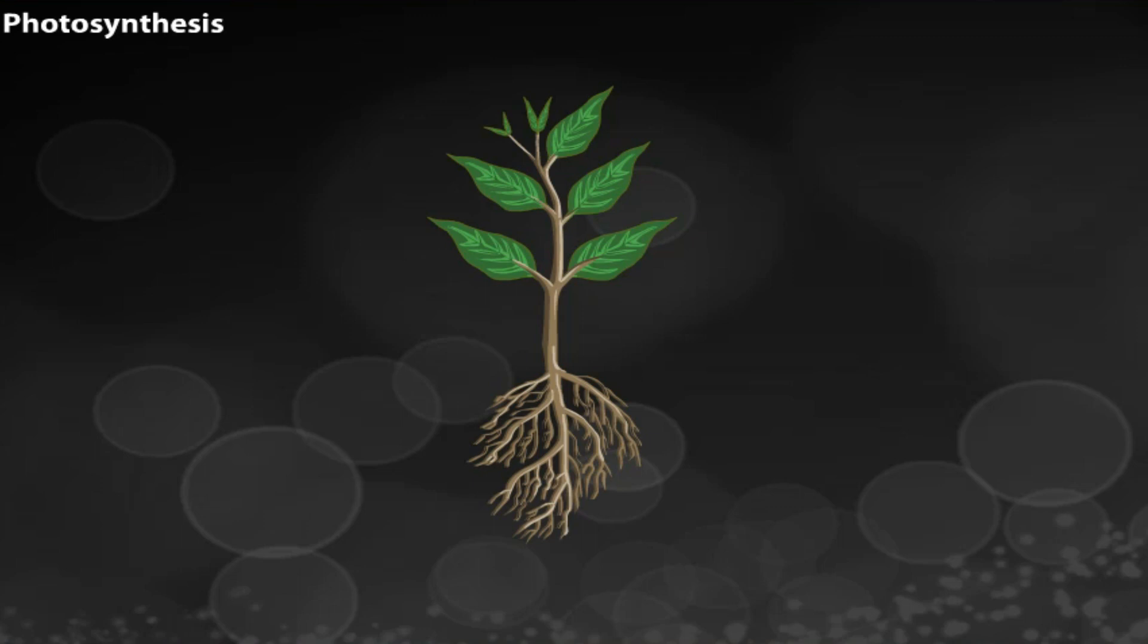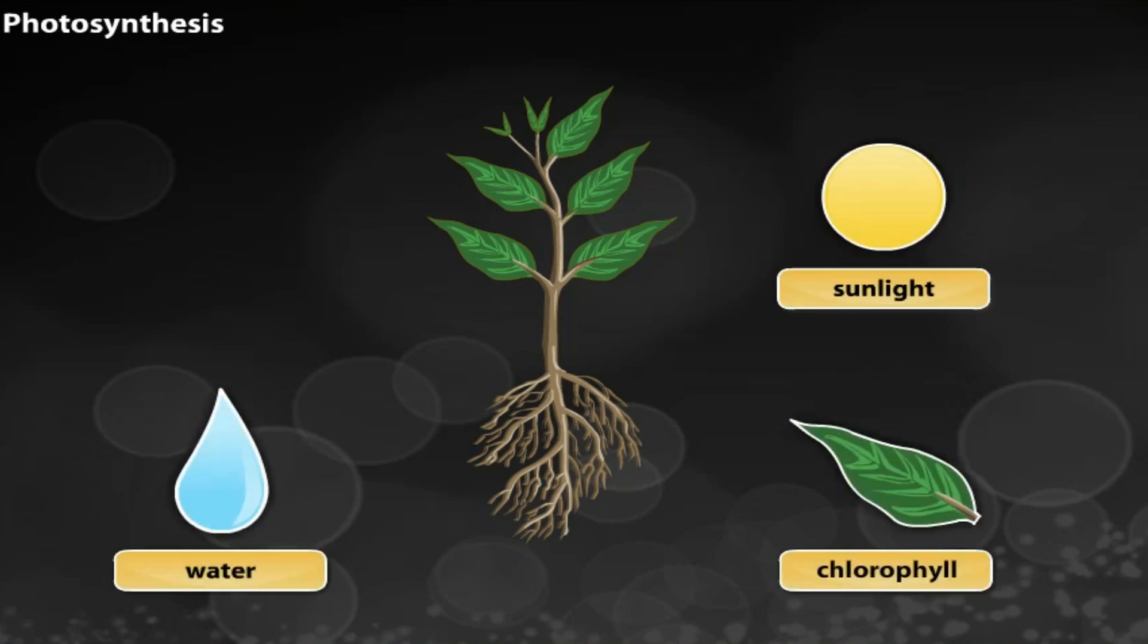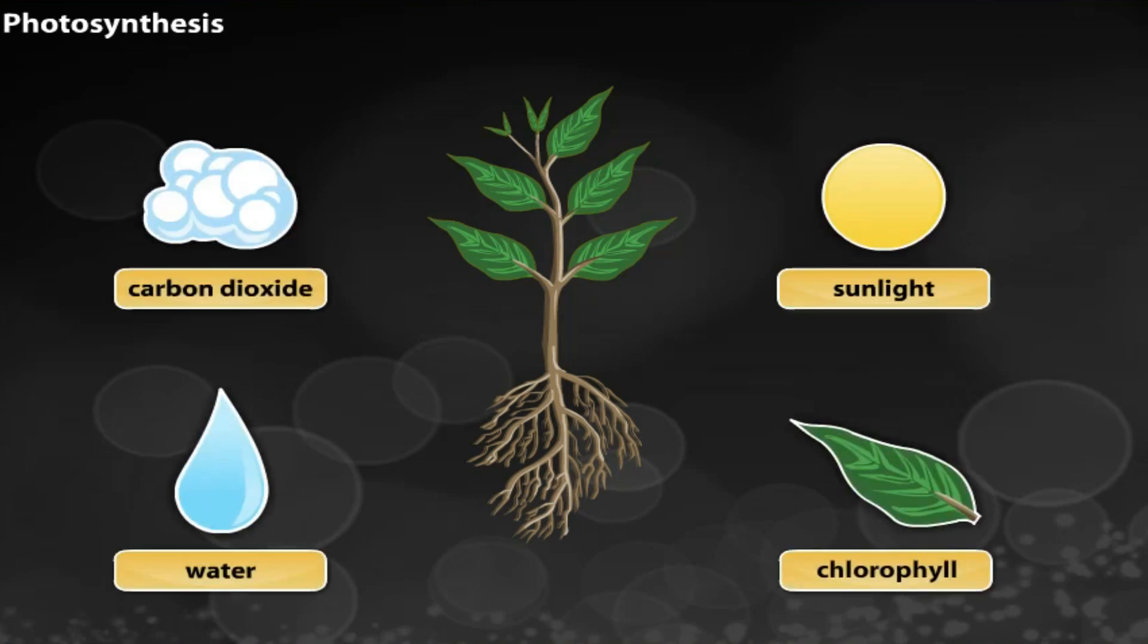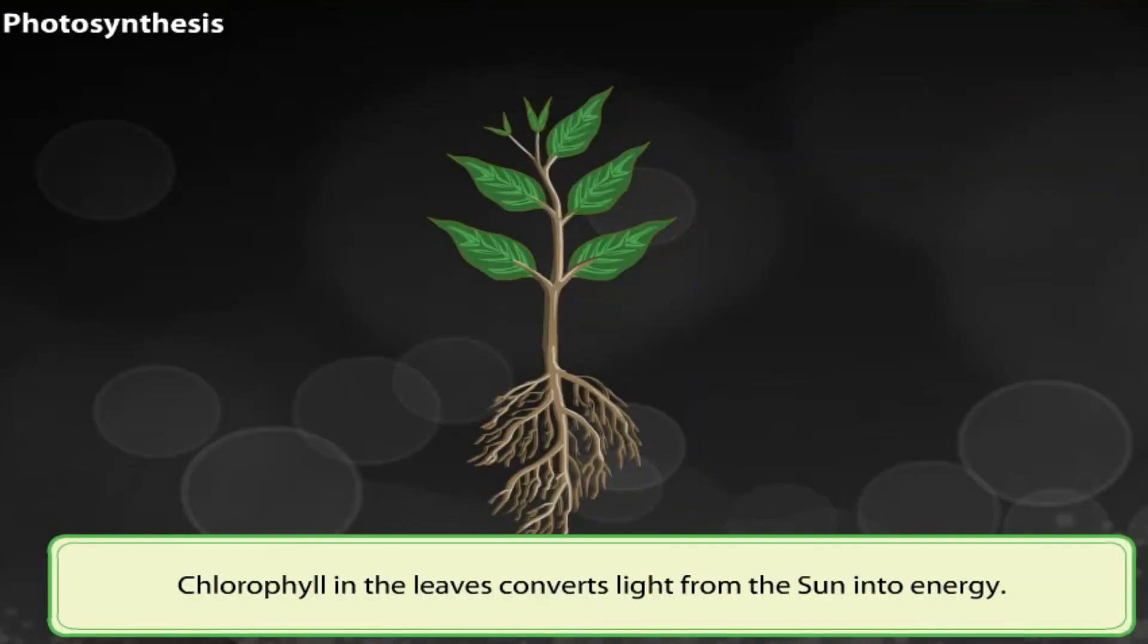Photosynthesis takes place in the presence of sunlight, water, chlorophyll and carbon dioxide. Chlorophyll in the leaves converts light from the sun into energy.